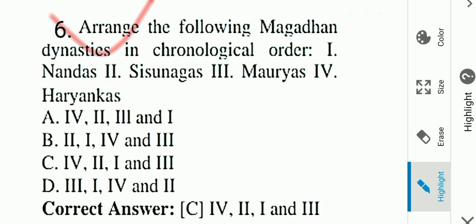Question number six: Arrange the following Magadha dynasties in chronological order — 1) Nandas, 2) Sisonaga, 3) Mauryas, 4) Haryangkas. Options: A) 4,2,3,1  B) 2,1,4,3  C) 4,2,1,3  D) 3,1,4,2. Answer is C: Haryangkas, then Sisonaga, then Nandas, then Mauryas. Option C is the correct answer.